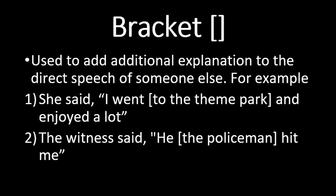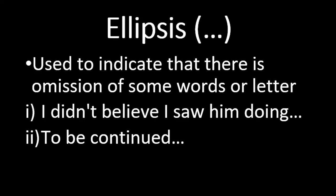For example, the statement 'I went and enjoyed a lot' does not give complete meaning — we don't know where she went. A second source adds '[to the theme park]' inside square brackets, making the sentence much more understandable for the reader. This is how square brackets are used to add clarifying information by a second source.